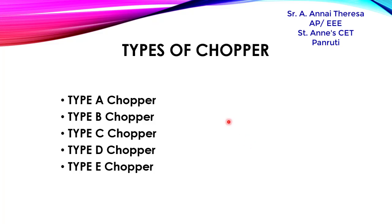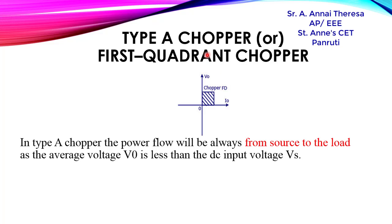In this video session we are going to see the first type, that is the Type A chopper. This Type A chopper is also called a first quadrant chopper. First quadrant means both the output voltage and output current will be positive. That's why it is called a first quadrant chopper. The power flow in this chopper will be from source to the load.